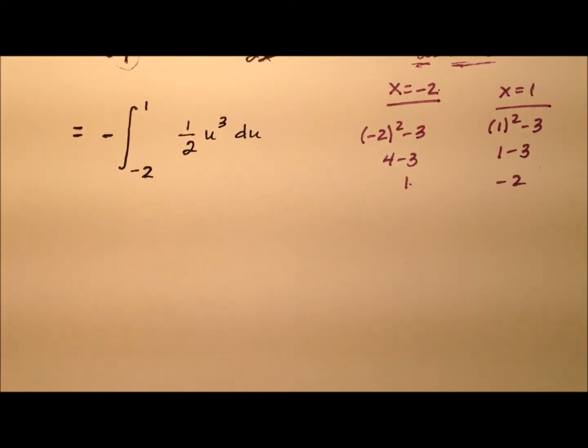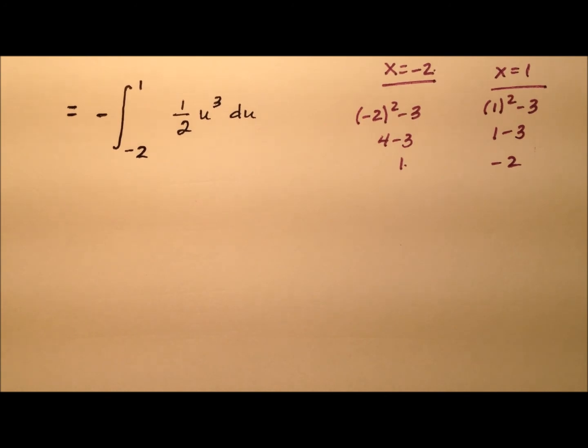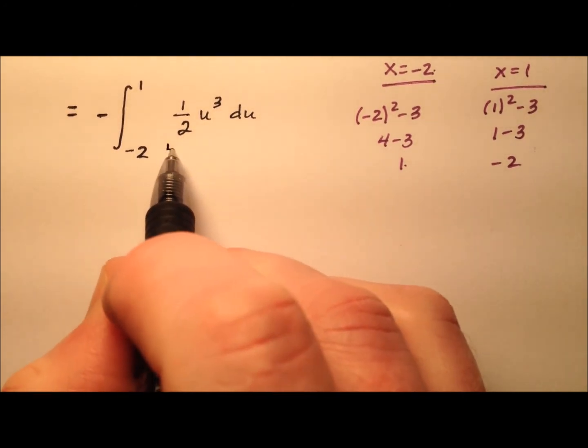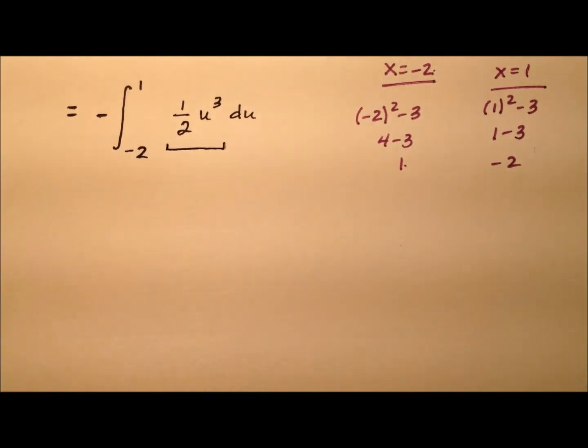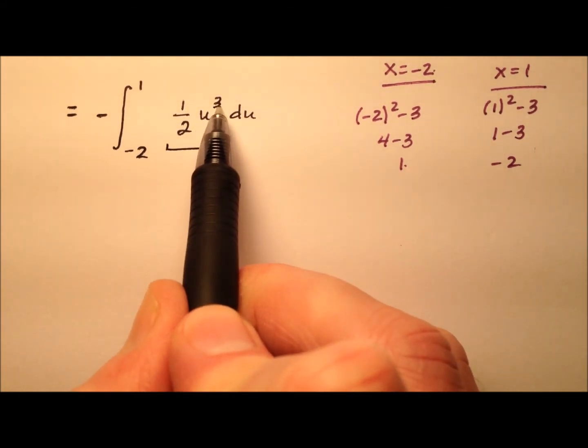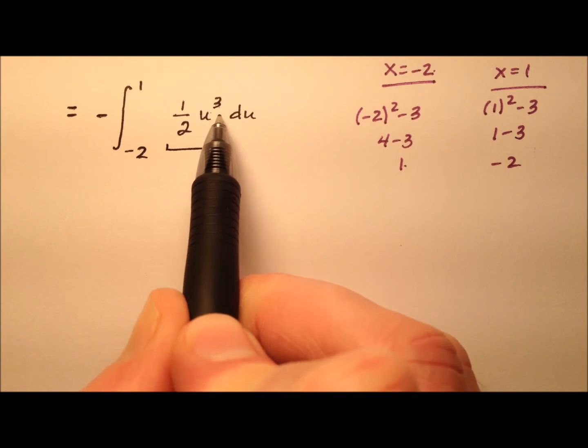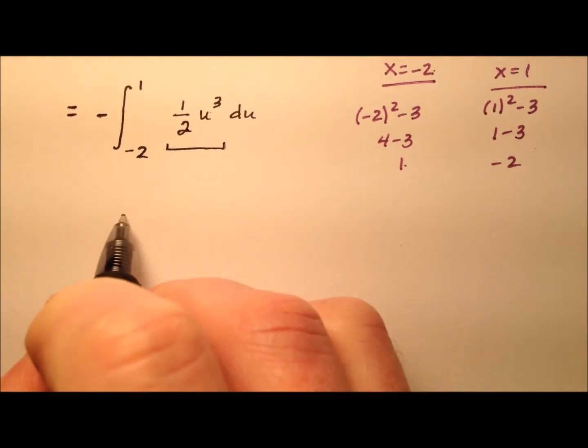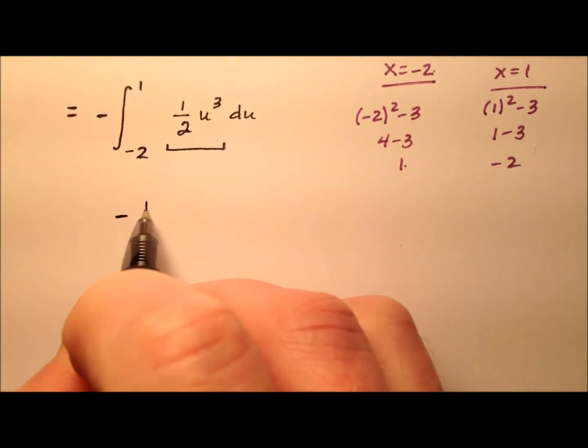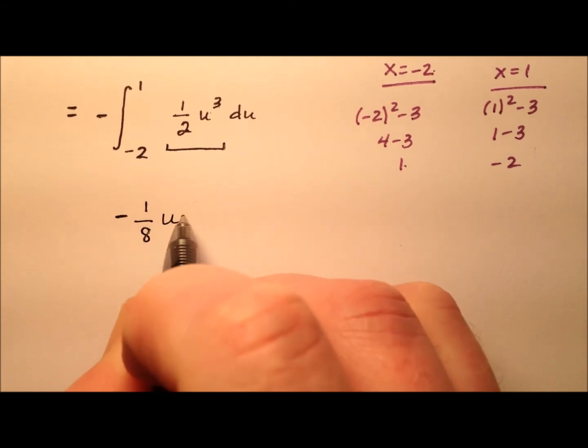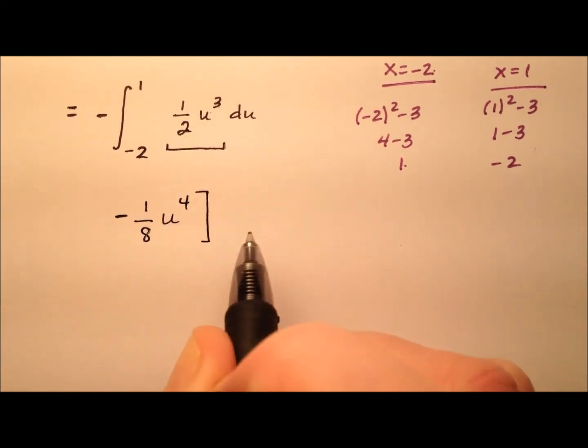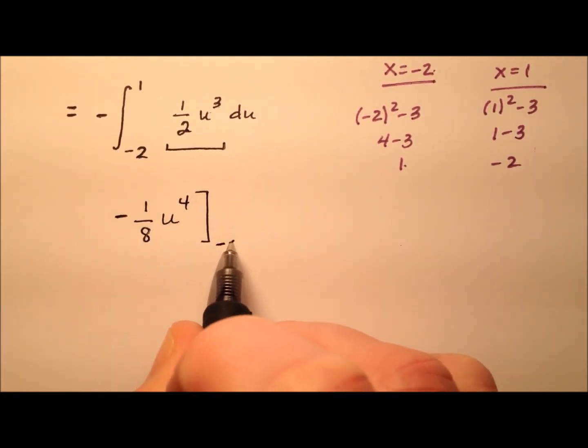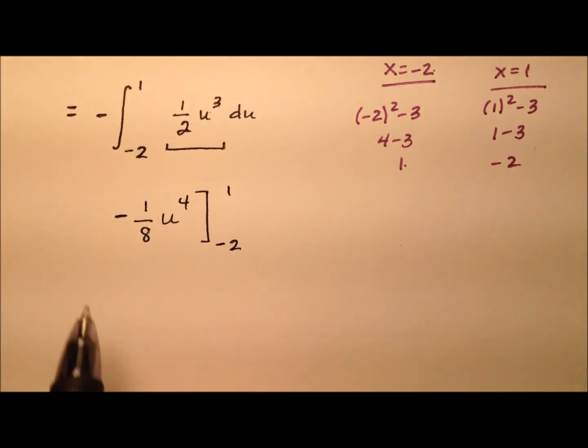So let's go ahead and move up, because now it seems like we're just about done. So integrating this 1 half u cubed, well we're going to add 1 to the power, so it'll be u to the 4th. And then we'll divide by that new power, so dividing by 4 gives me this negative 1 eighth u to the 4th. And we're going to evaluate that from negative 2 to 1.